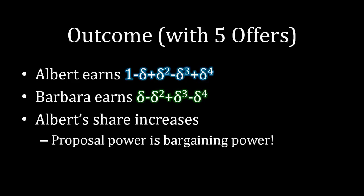If we were to look at the outcome with five offers, this is adding an additional counteroffer for Albert at the end. Albert will have proposal power in the fifth stage. What would happen there is we would just continue with this pattern down the line. Albert would receive a payoff of what we saw before, but now we would add an additional delta to the fourth power, and that would be subtracted from Barbara's payoff. We're seeing oscillation for both players, and Albert is benefiting here. Why is Albert benefiting? We know that proposal power is a key form of bargaining power. By adding an additional stage at the end, Albert has more proposal power toward the end, which forces Barbara to give him more concessions in the stage before.